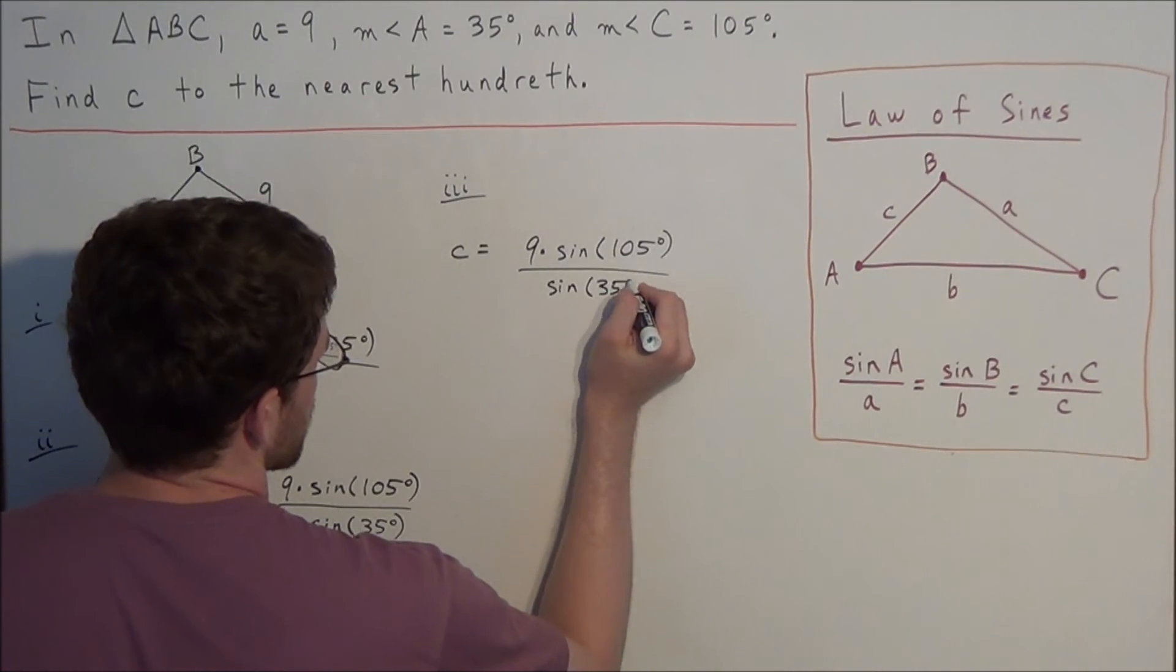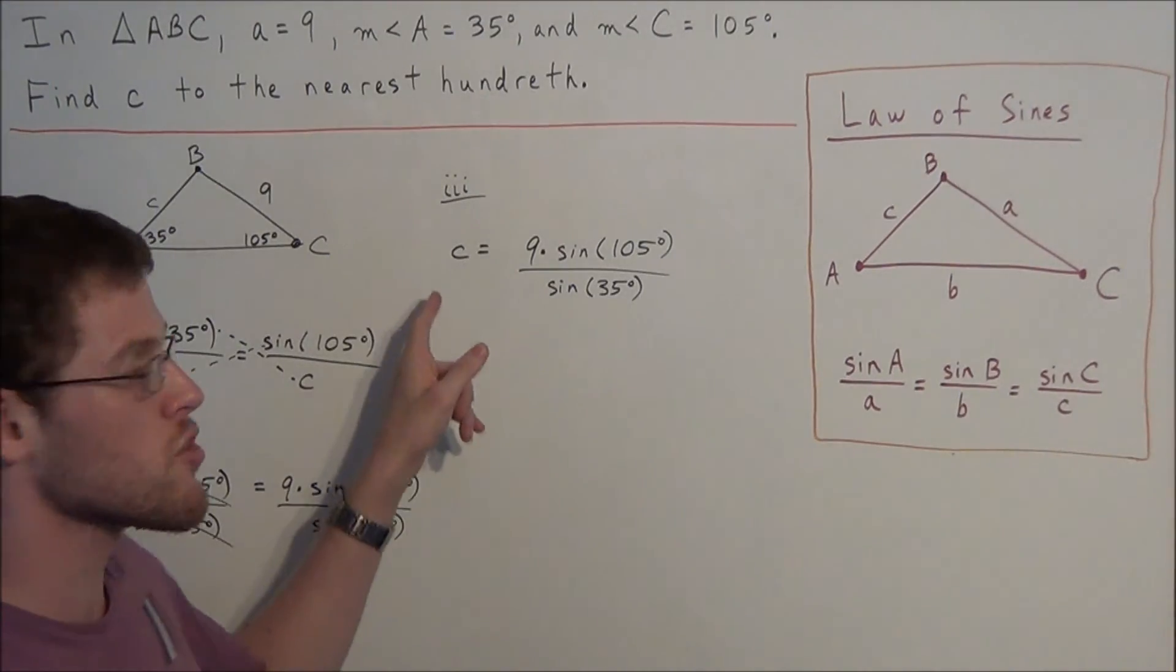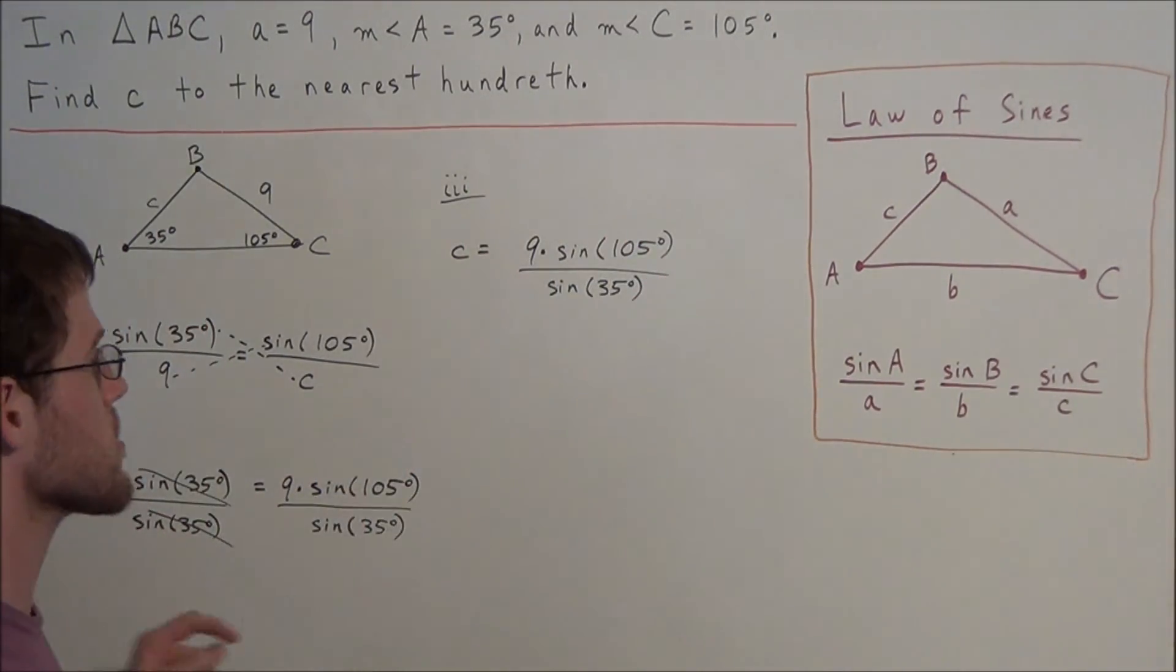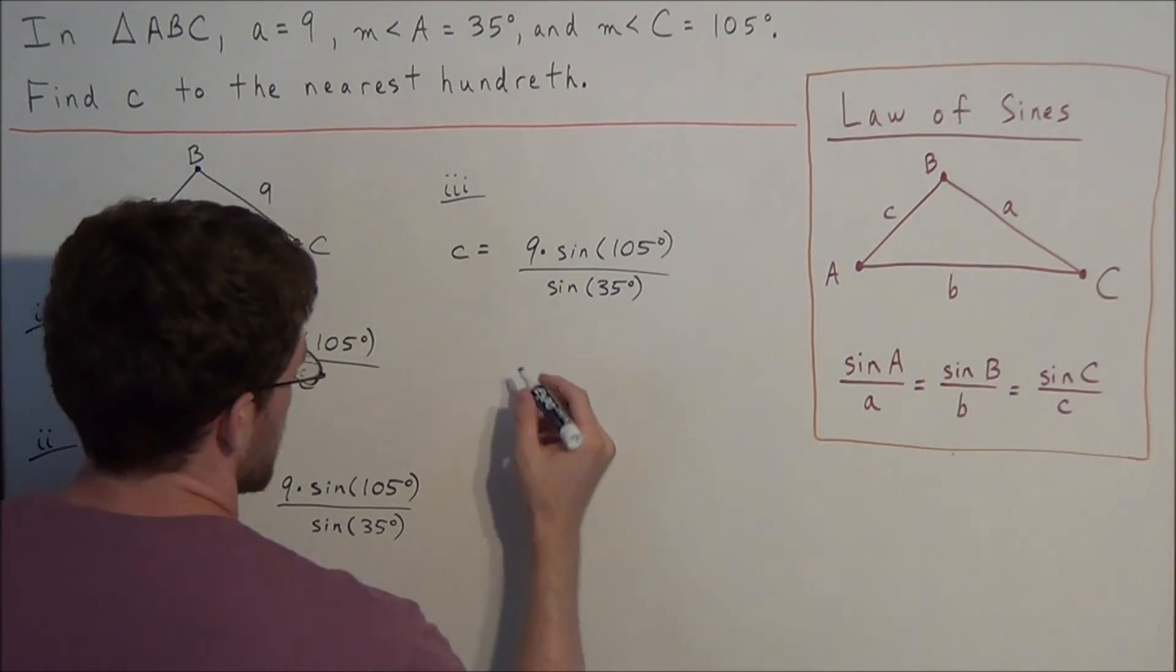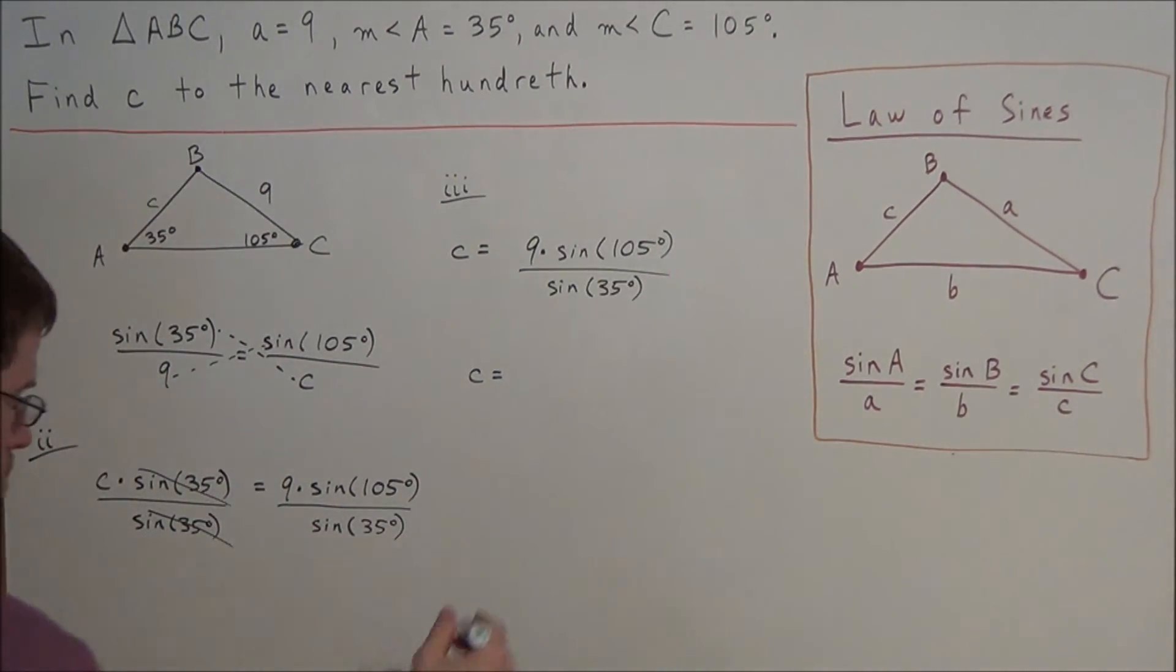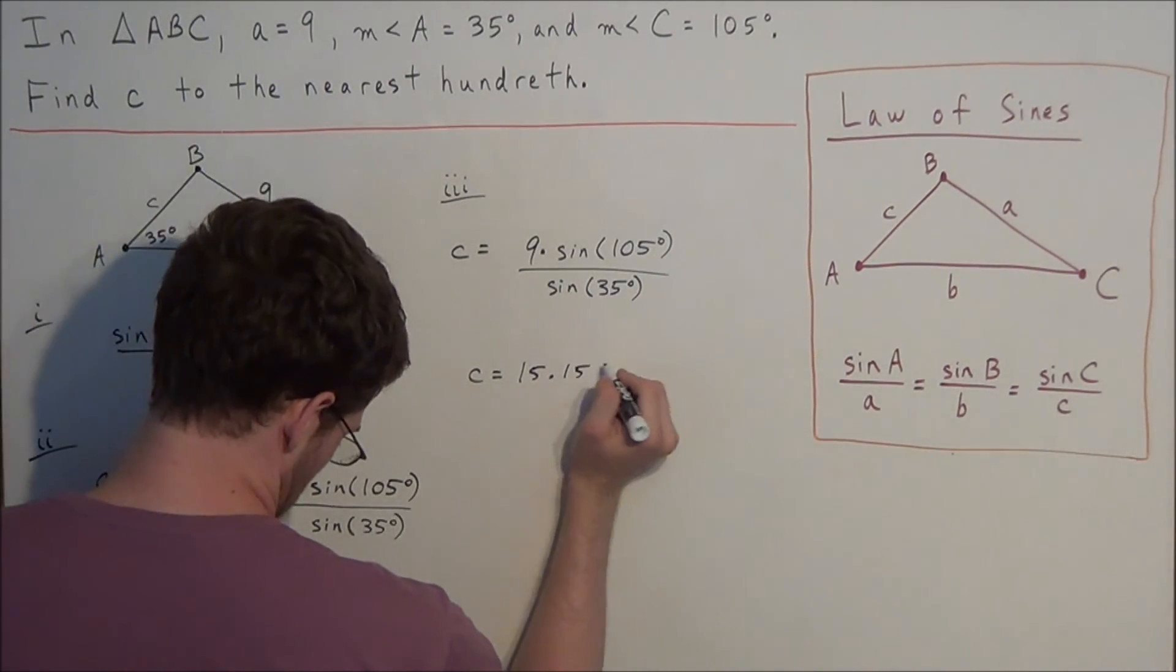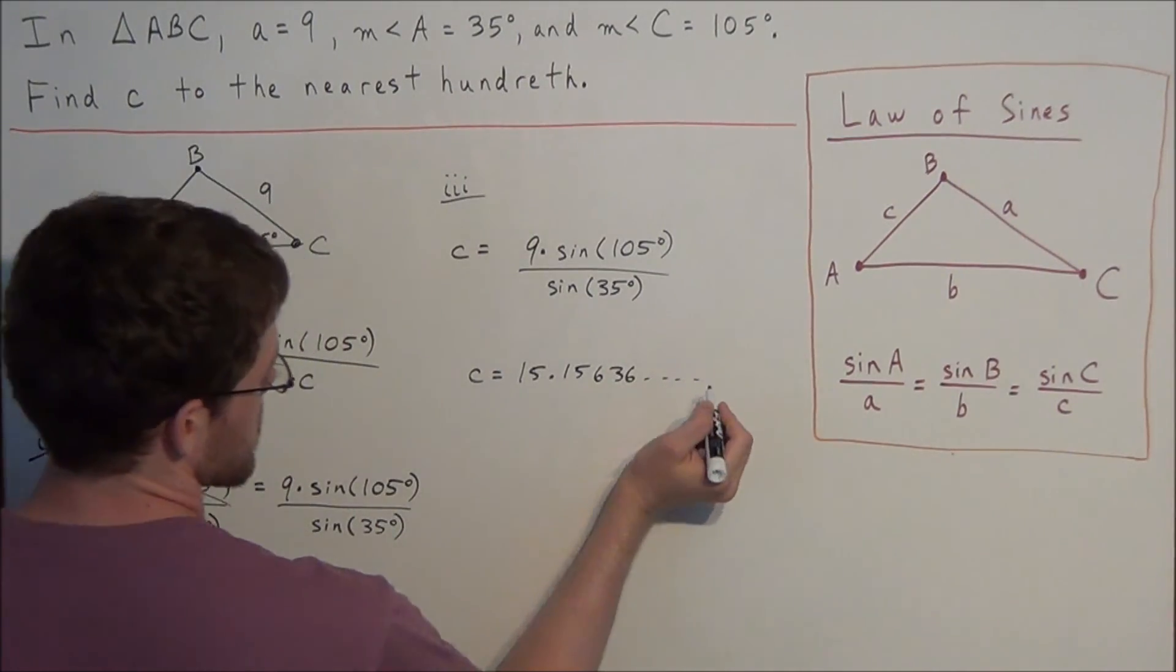Now you could evaluate sine of 105 degrees and sine of 35 degrees beforehand, but I like to save it all for the last step because it's much easier to just punch this entire thing in your calculator. But just make sure that you close your parentheses around 105 degrees. So when we punch these values in our calculator, make sure that we're in degrees and not radians, we should get c equals 15.15636, and this decimal will continue on.